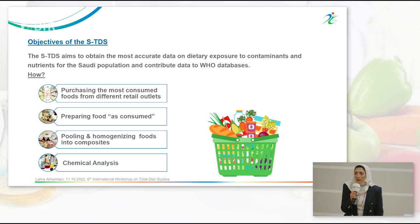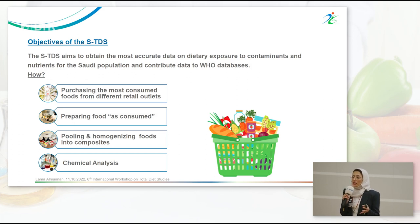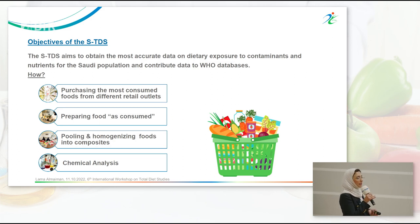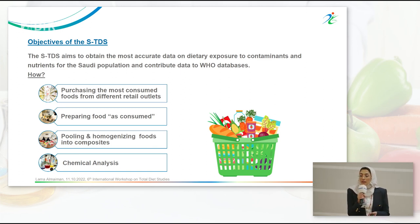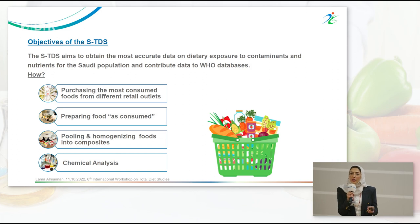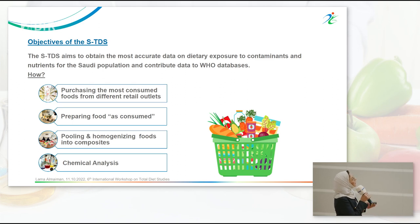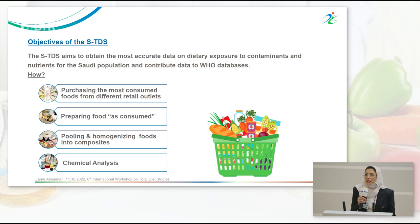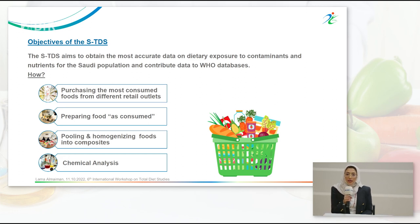We have two objectives for the Saudi total diet study. The first is to obtain more accurate data on dietary exposure to contaminants and nutrients intake. The second is to share data with the WHO to be used for international risk assessment committees like JECFA and JMPR. We will do that by purchasing the most consumed foods from food retail outlets, preparing the foods as consumed, pooling and homogenizing into composites, and performing chemical analysis.